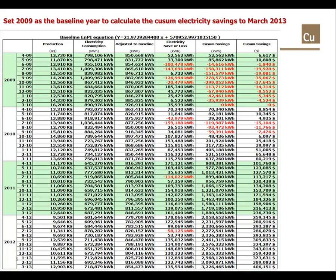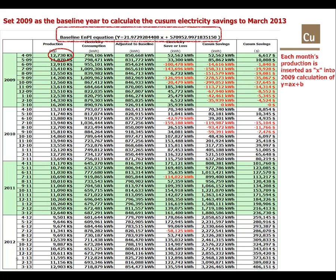Using the 2009 baseline, we can determine the cumulative electricity savings in the four years to the end of the 2012 business year, that's in March 2013. Each month's production figure is inserted into the 2009 y equals ax plus b baseline equation, as shown on the previous slide. That generates an energy baseline adjusted to actual production figures for that month.